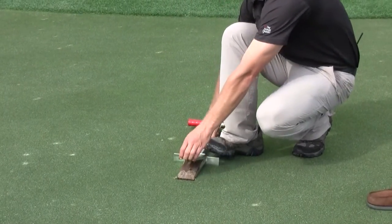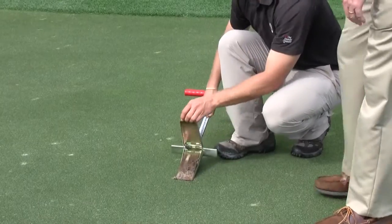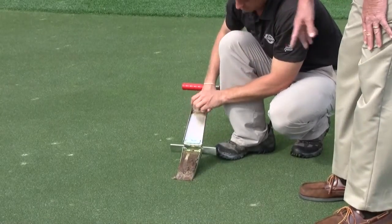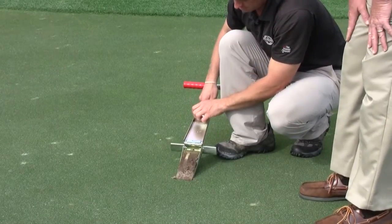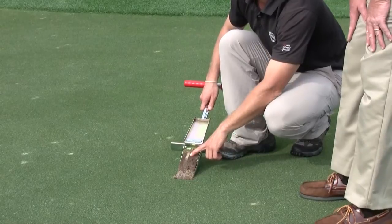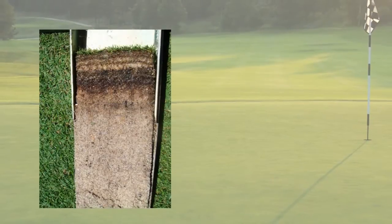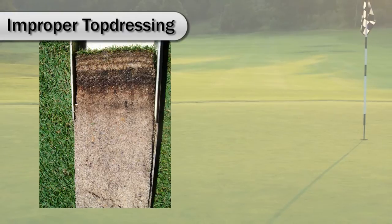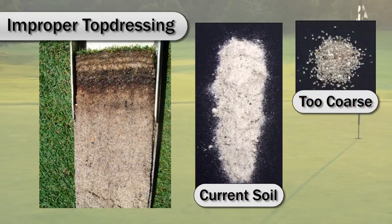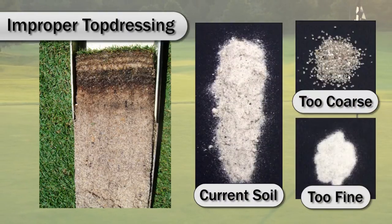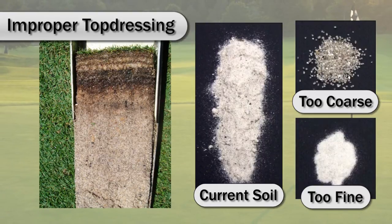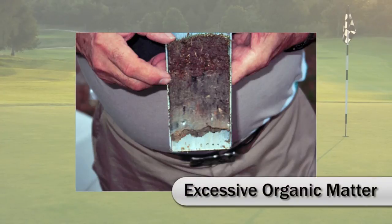The soil profiler also provides a great opportunity to examine the root zone for obstructions or undesirable layering. This type of layering can result from heavy, infrequent top dressing rates, utilization of top dressing sand that has a particle size distribution which differs from the original size from which the root zone was constructed, and excessive organic matter accumulation.